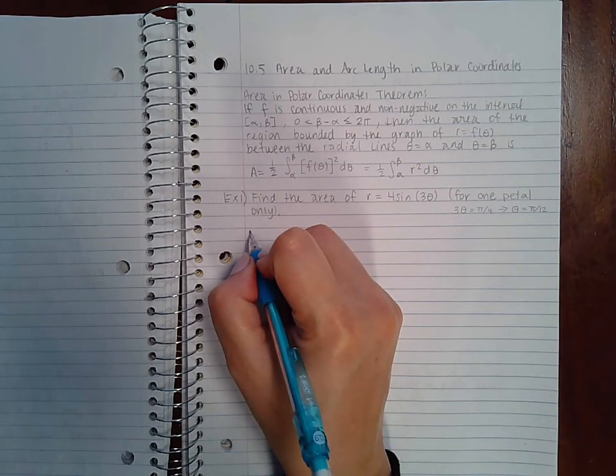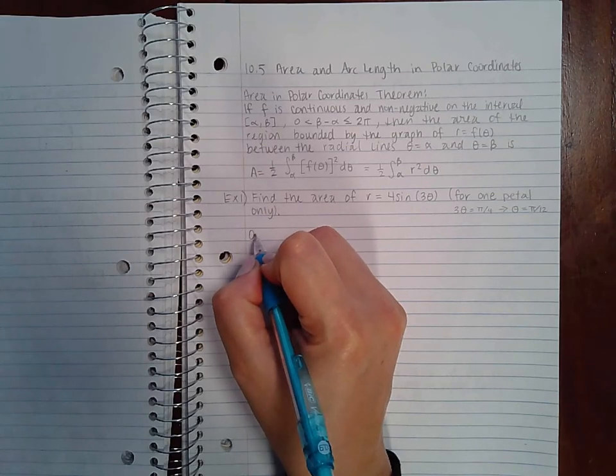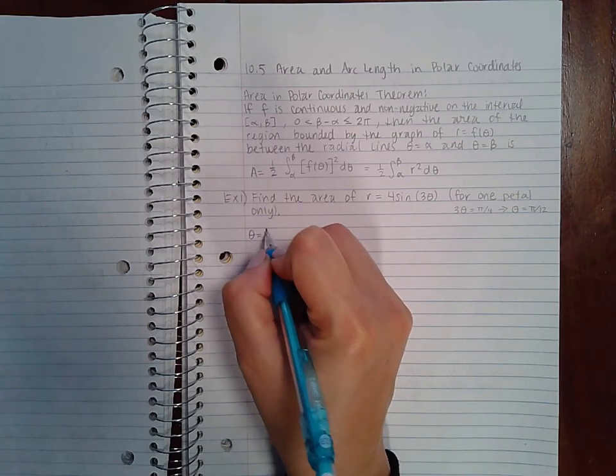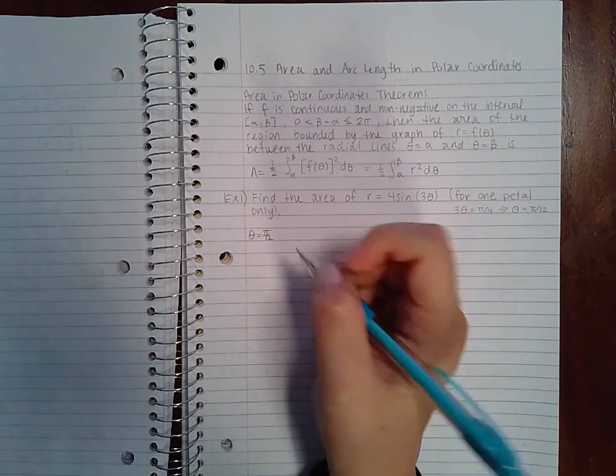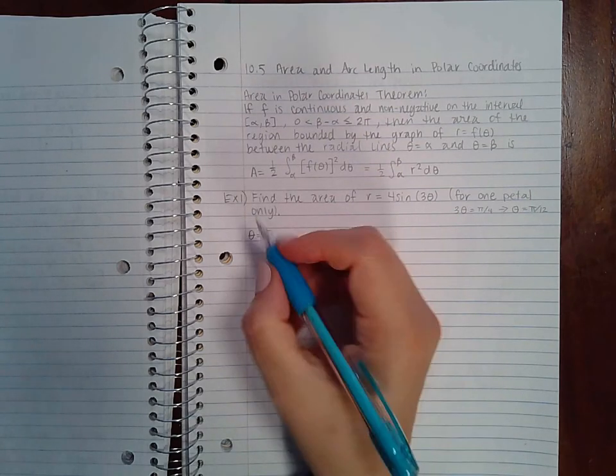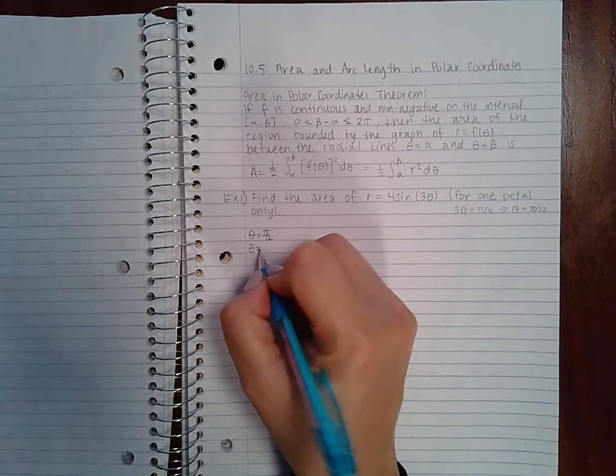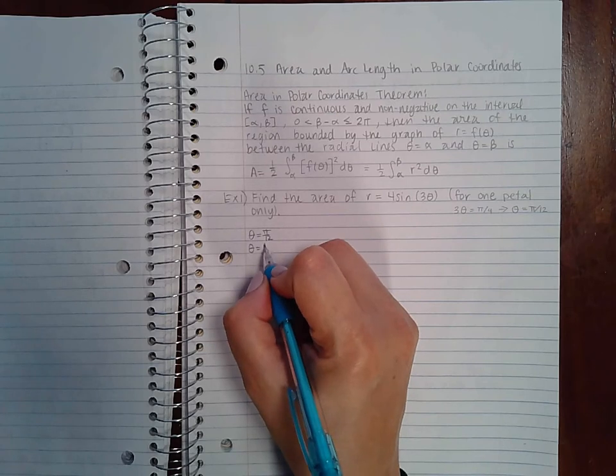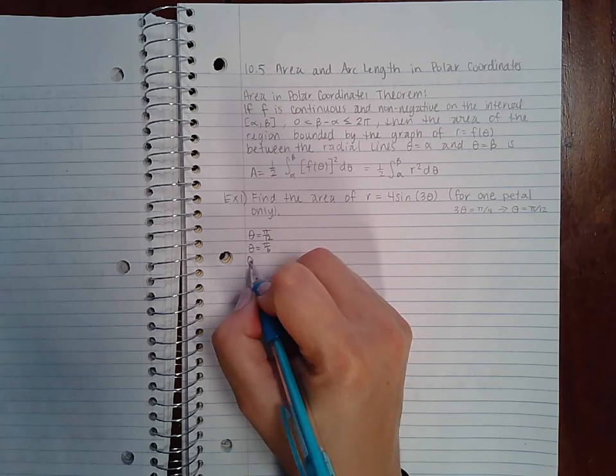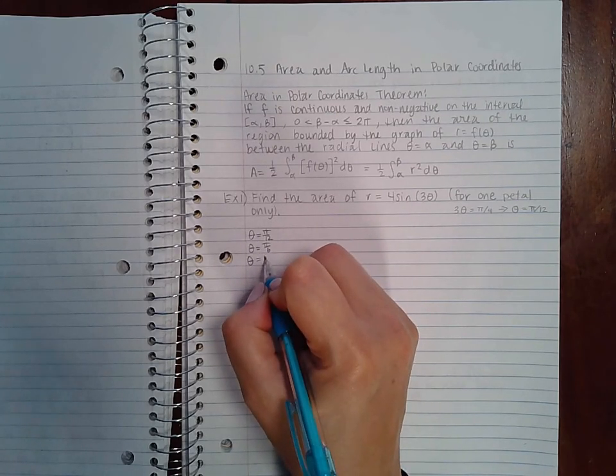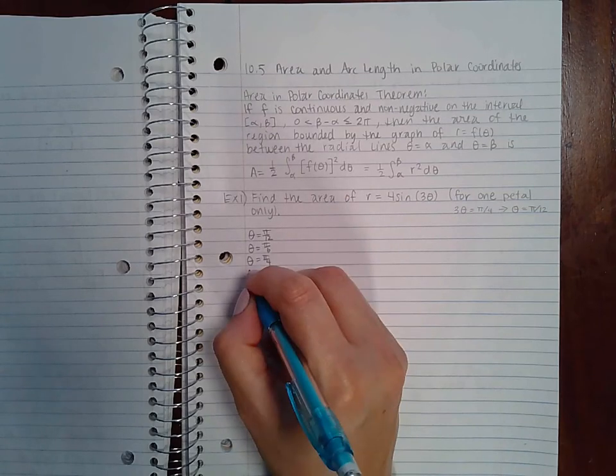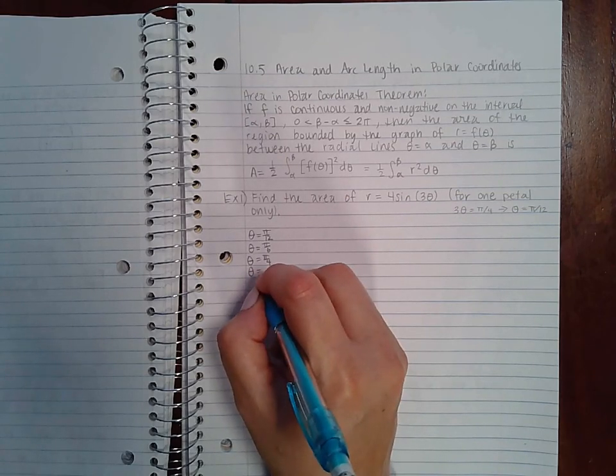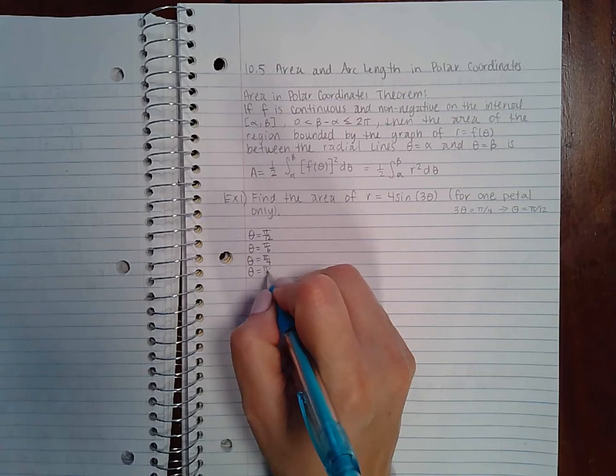So what I'm going to do is I'm going to take my θ and I'm going to go in increments of π/12. I want to keep finding values until I can get to: 2π/12 is π/6, 3π/12 is π/4, 4π/12 is π/3.